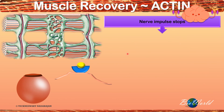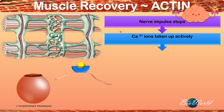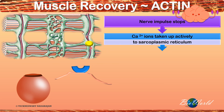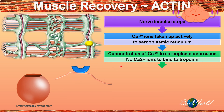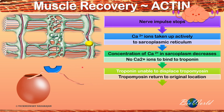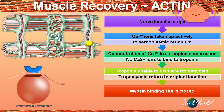The nerve impulse will stop, therefore the calcium ions will not be released from the sarcoplasmic reticulum anymore. Instead, the calcium ions will now be taken up actively into the sarcoplasmic reticulum. Without the calcium ions in the sarcoplasm, the calcium ions are not available to bind to troponin anymore. This will cause the troponin to move the tropomyosin back onto the myosin binding site. Without calcium ions, troponin is unable to displace the tropomyosin, so tropomyosin returns to its original location, causing the myosin binding site to become closed.